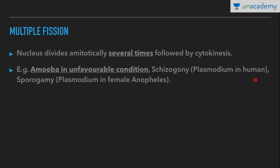Schizogony is another example — that is plasmodium in humans. In malaria, there is a stage called schizogony when the plasmodium, the malarial parasite, is present in humans. This also occurs when the plasmodium is in the female Anopheles mosquito. In all these cases, there are multiple fissions.